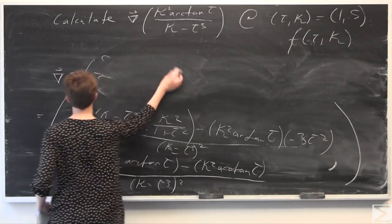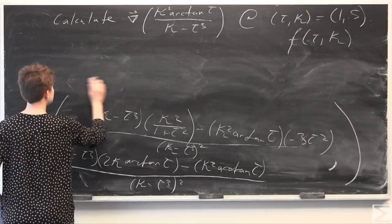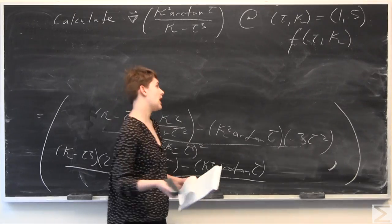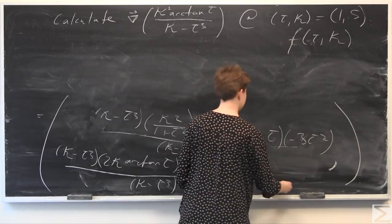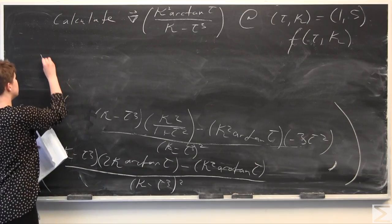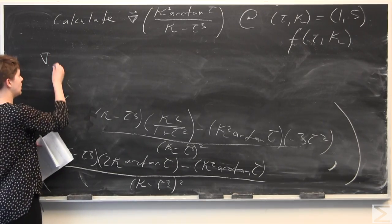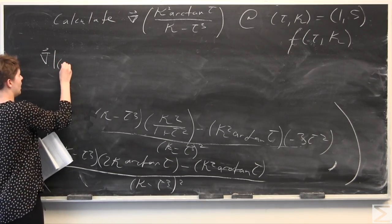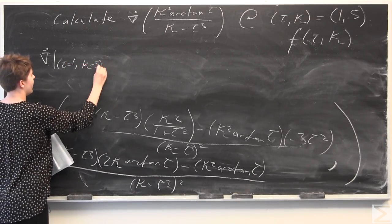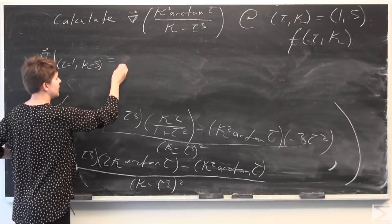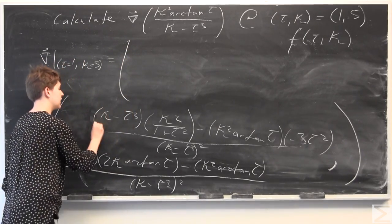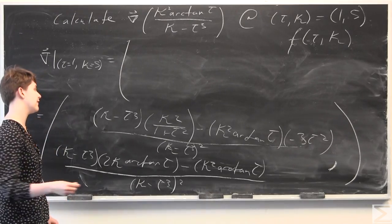Now we need to evaluate this at tau equals 1, kappa equals 5. When we evaluate the gradient at tau equals 1 and kappa equals 5, everywhere we see tau we plug in 1, and everywhere we see kappa we plug in 5. We'll do this component by component.